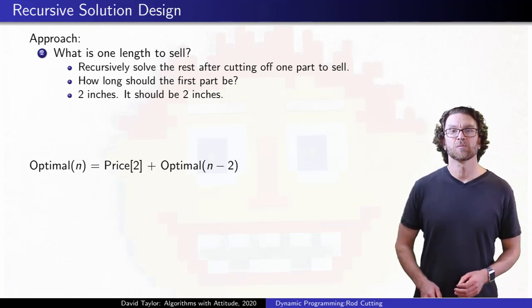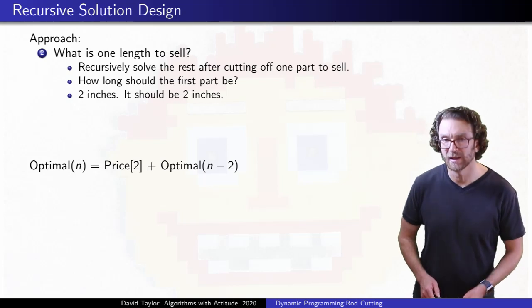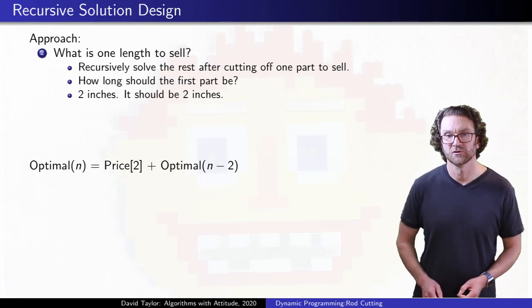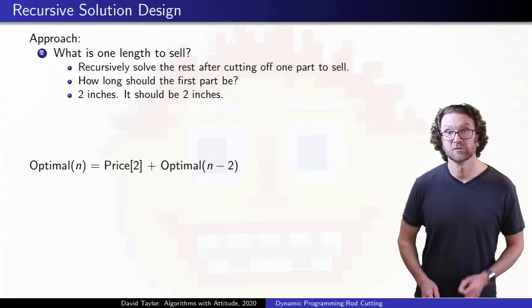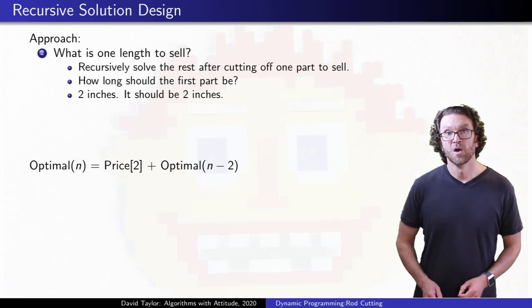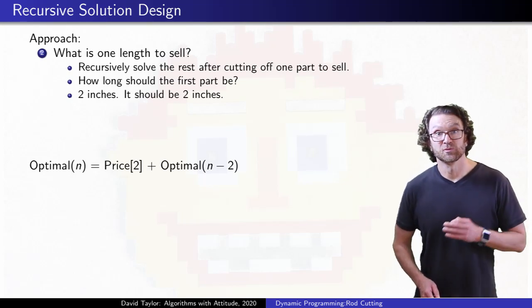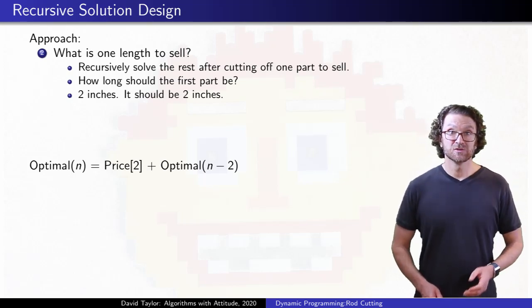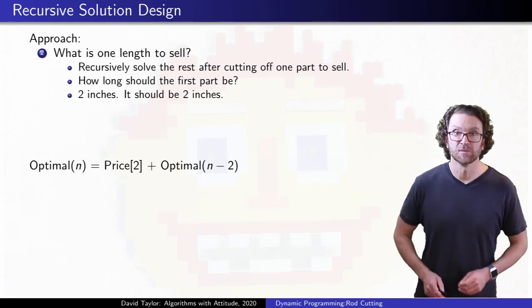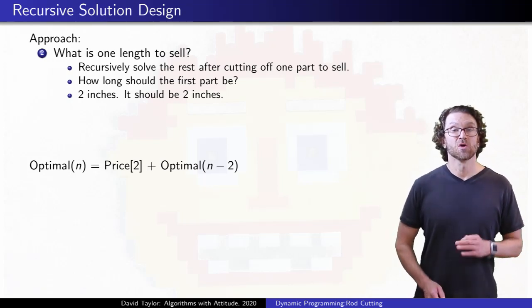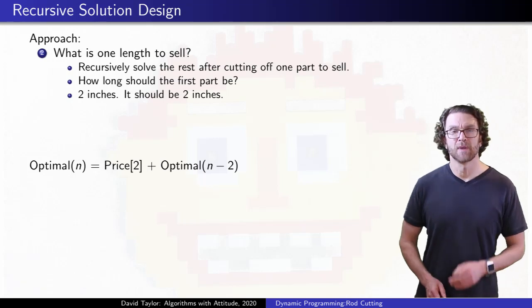and then you recursively figure out how much you can get for the remaining n-2 inches. You don't try to algorithmically solve that smaller problem. Once you get something smaller than the original problem, you just assume that recursion magically solves the remaining instance for you, as long as you have a base case, which we'll come back to.